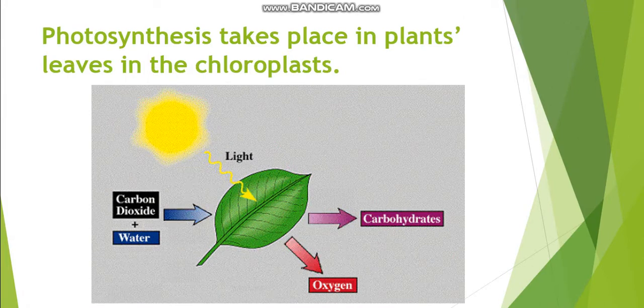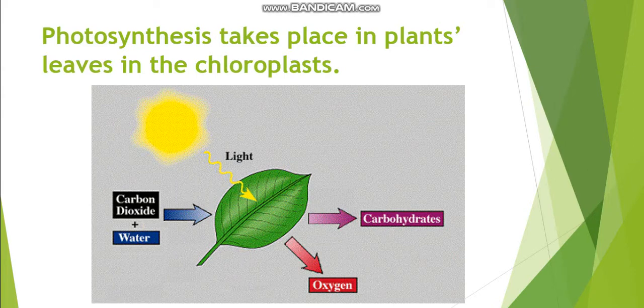Photosynthesis takes place in plants' leaves in the chloroplasts. The green leaves produce carbohydrates and oxygen.